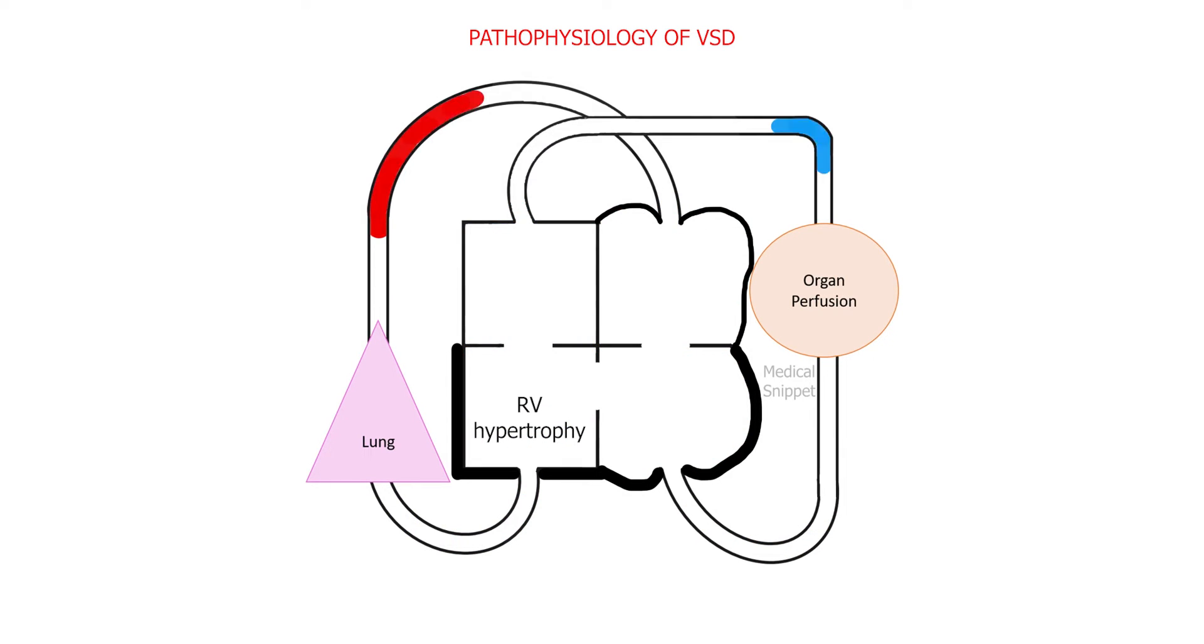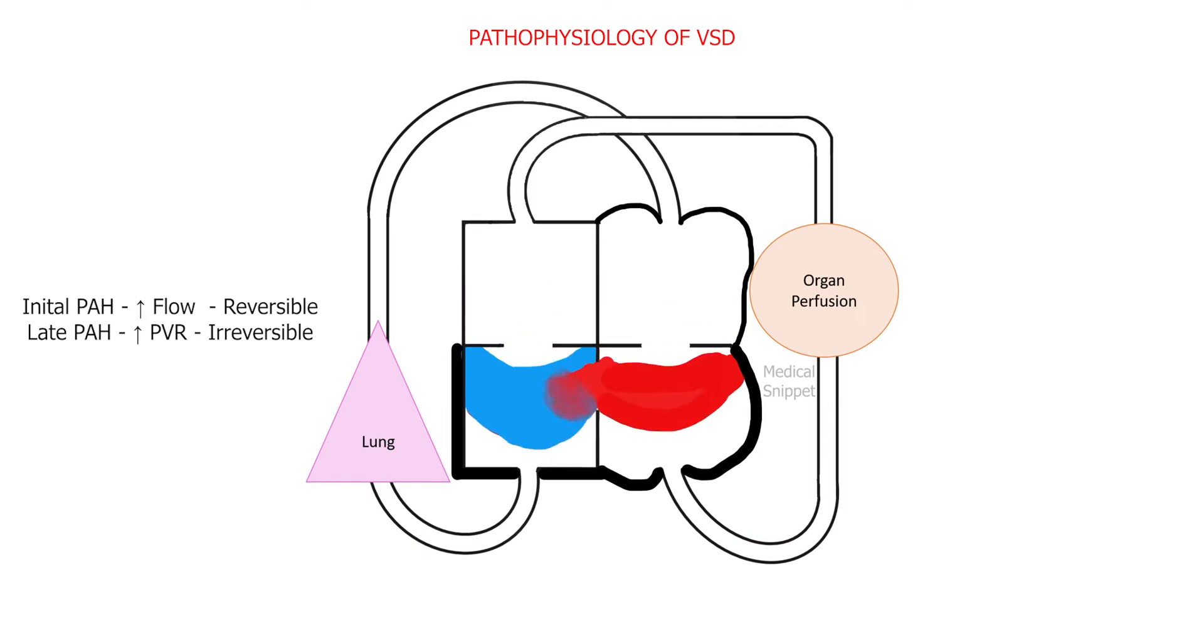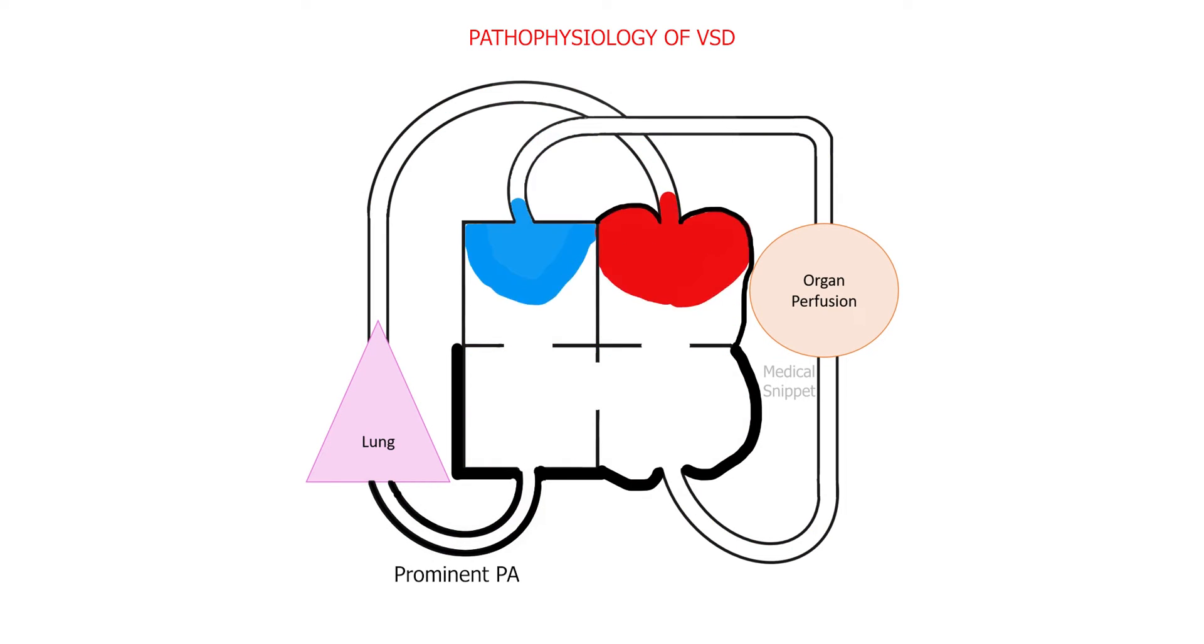Initially, there is pulmonary arterial hypertension due to increased pulmonary flow. This pulmonary arterial hypertension is reversible. As time progresses there is remodeling of pulmonary vascular bed for increased pulmonary blood flow. This increases the pulmonary vascular resistance. Pulmonary arterial hypertension due to increased PVR is usually irreversible. The pulmonary artery becomes prominent but not much dilated as in atrial septal defect.